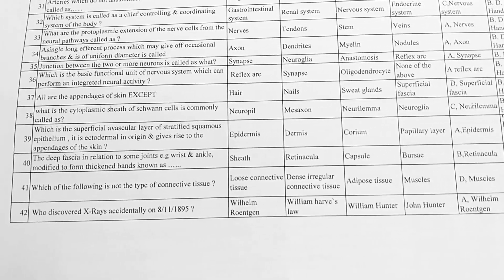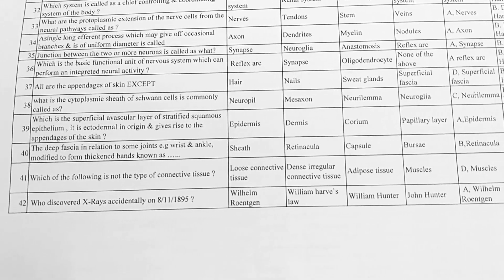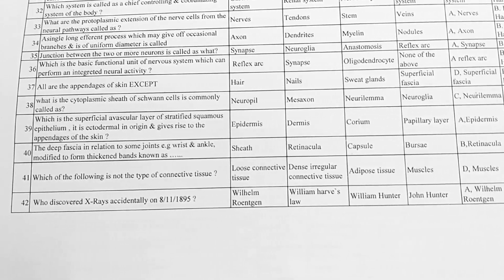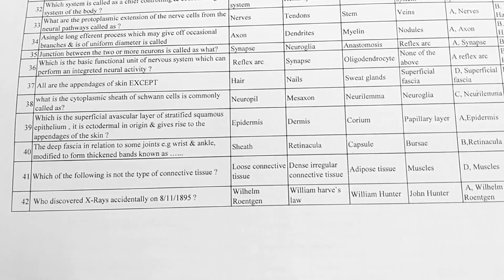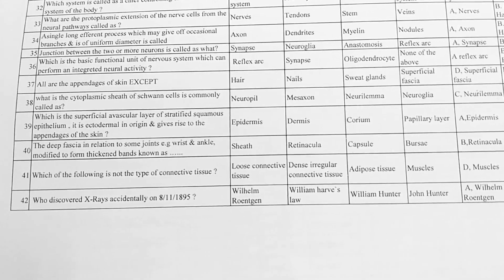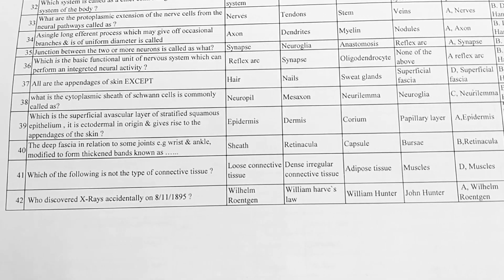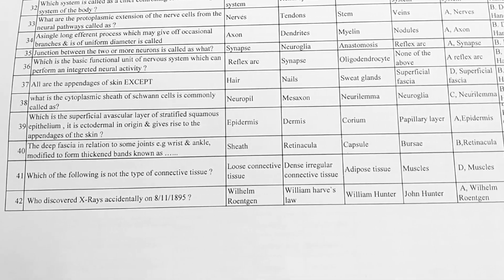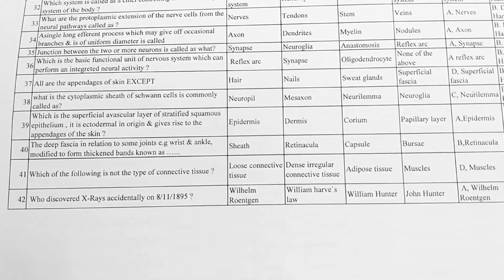Next, which is the basic functional unit of the nervous system which can perform an integrated neural activity? Options: A. reflex arc, B. synapse, C. oligodendrocytes, D. none of the above. Option A is correct, reflex arc.